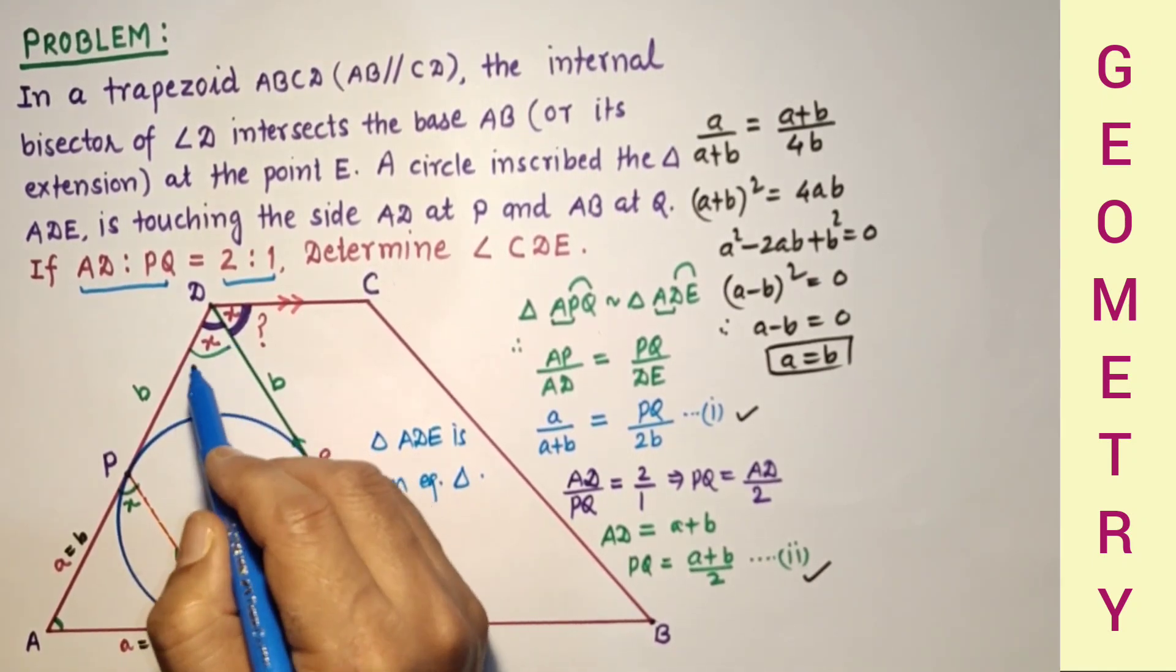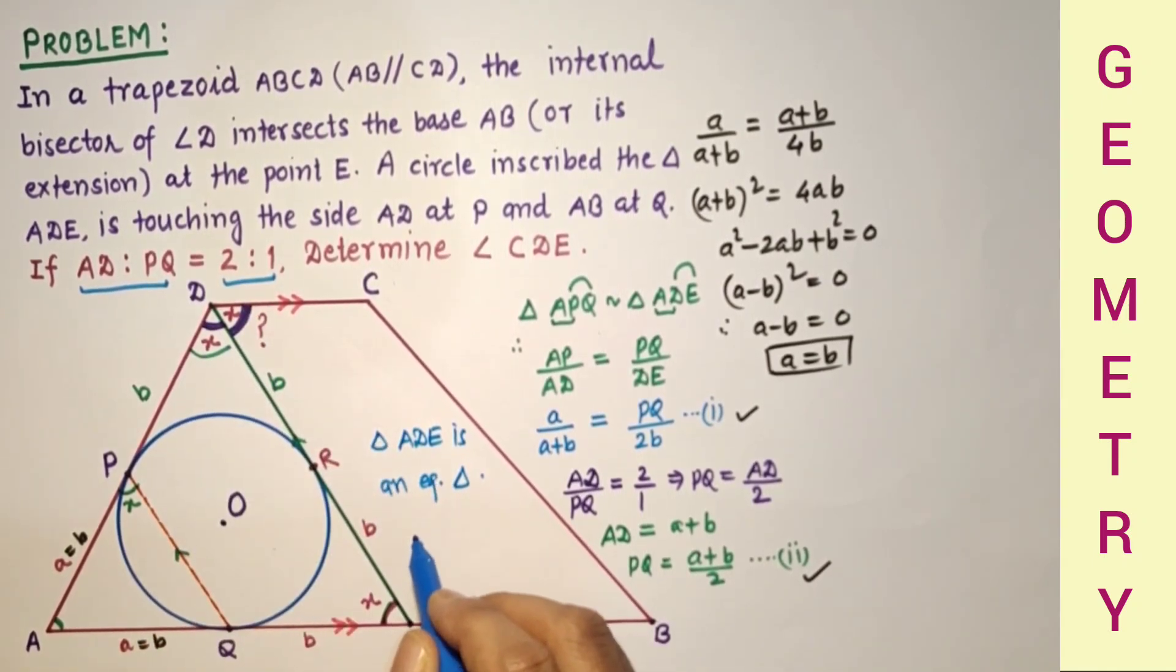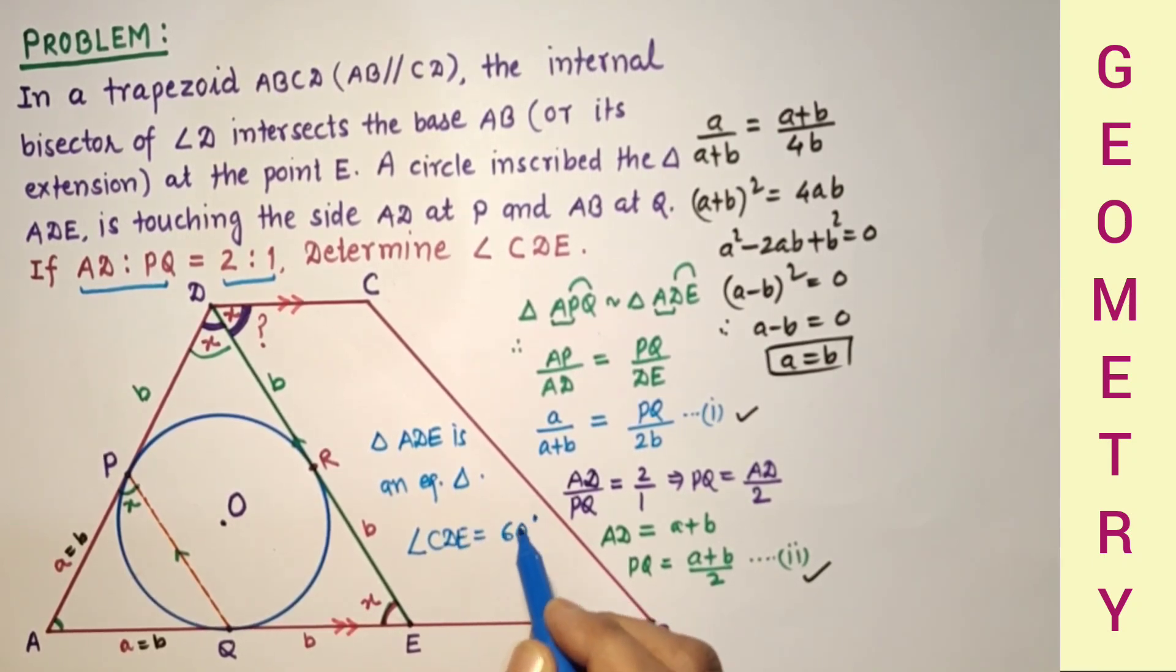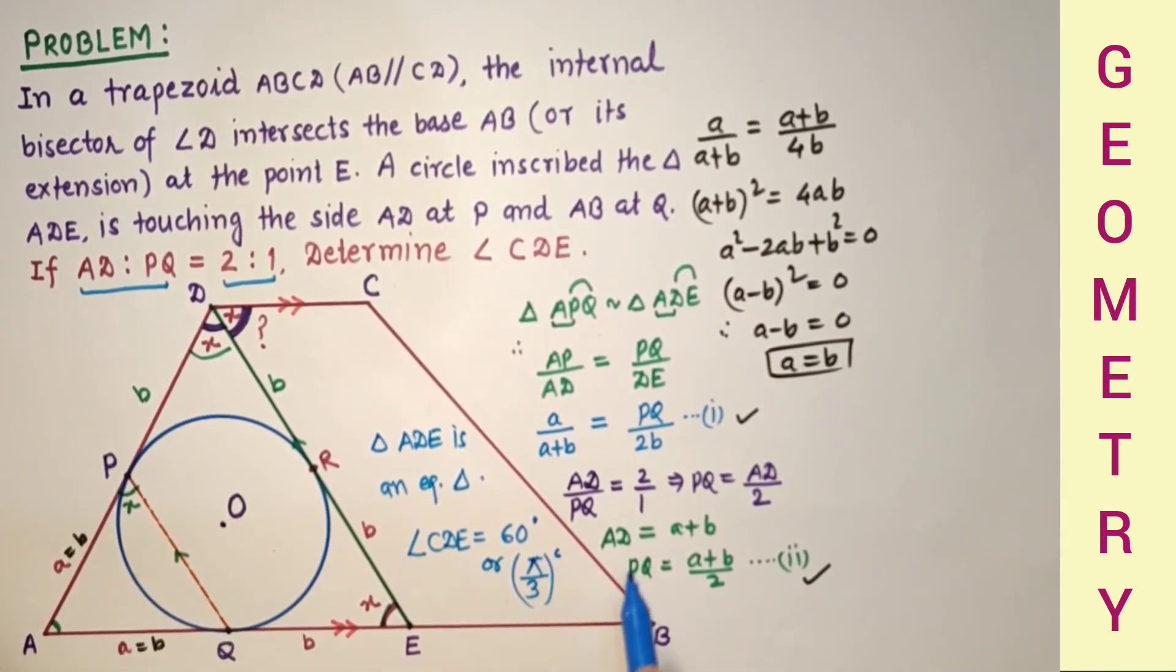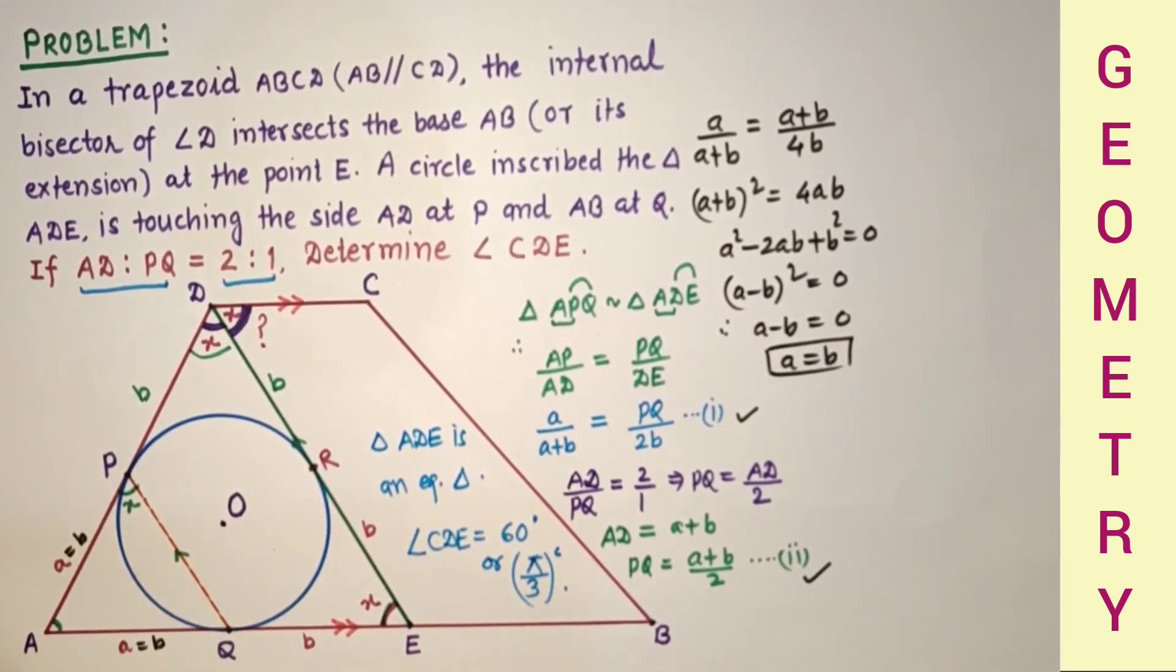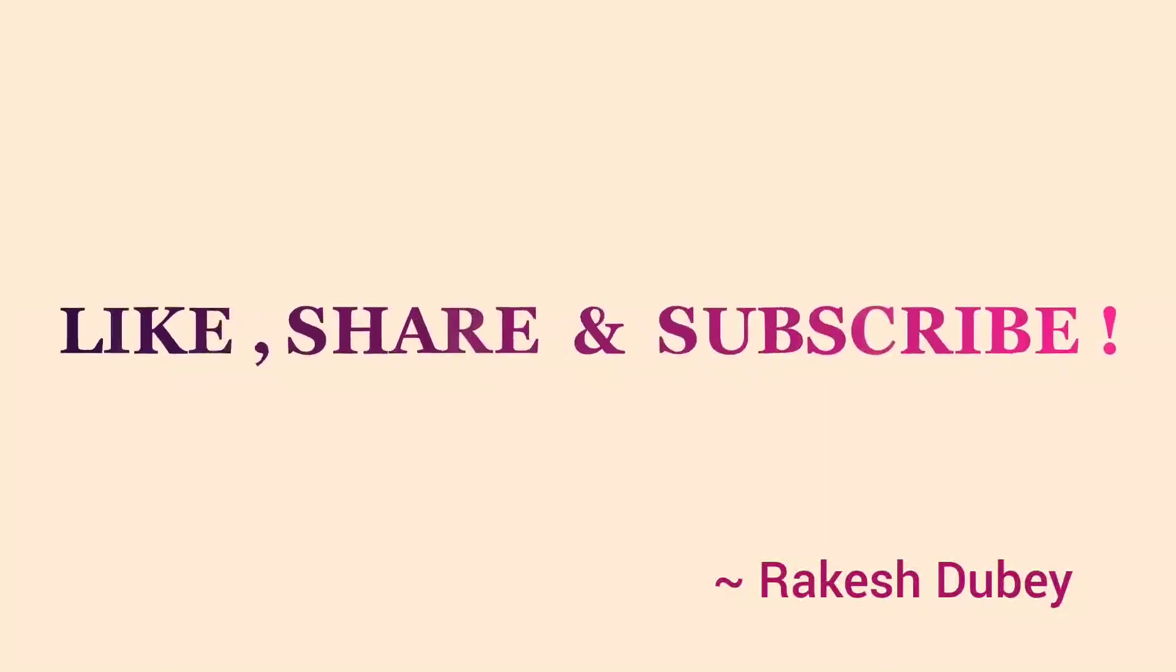So angle X is 60, this is 60. Therefore, finally, angle CDE is equal to 60 degrees, or pi by 3 radians. That is the answer. As you observed.